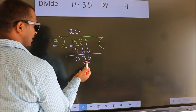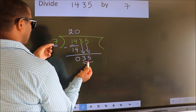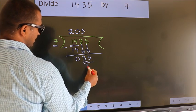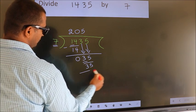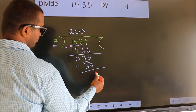When do we get 35? In 7 table. 7 5s 35. Now, we subtract. We get 0.